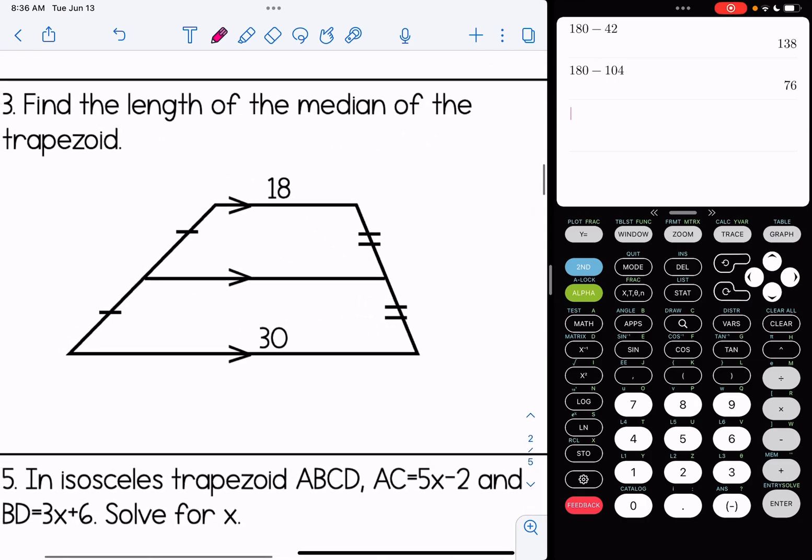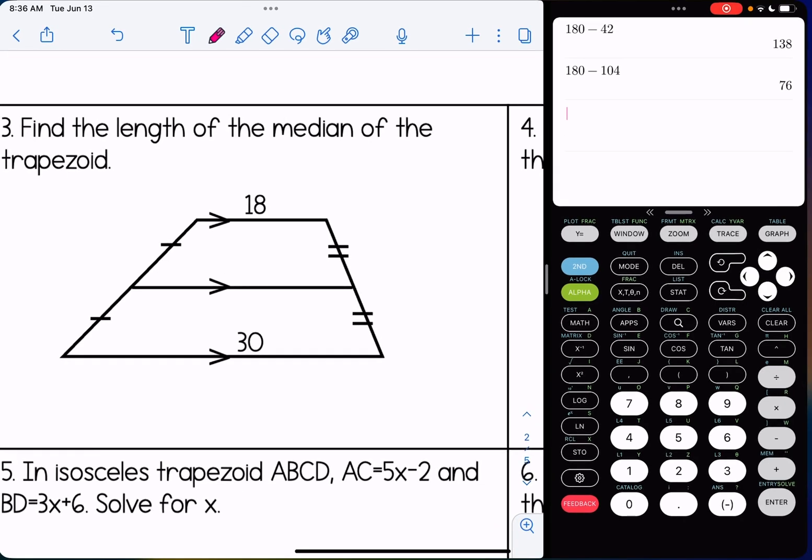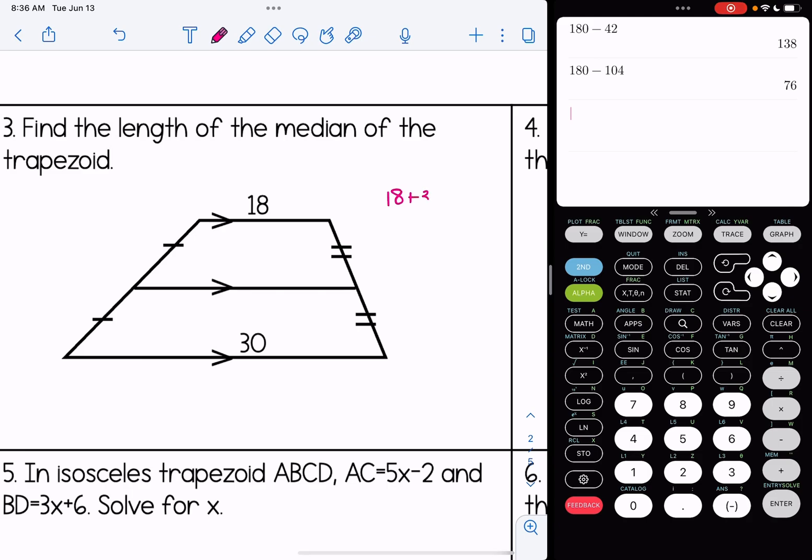Okay, number three, find the length of the median of the trapezoid. So let's recall our rule that the median is the average of the bases. To find the average of two things, we add them up and we divide by two. So I'm going to add up 18 and 30, divide by two. That would give me 48 over two or 24.